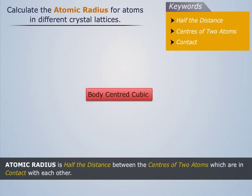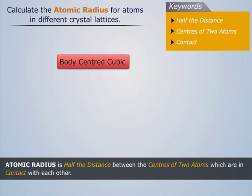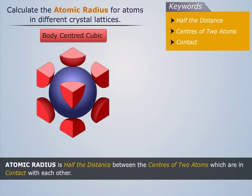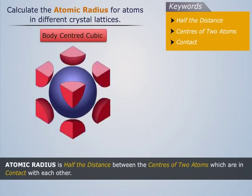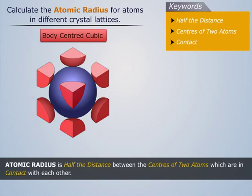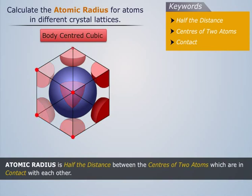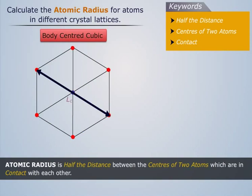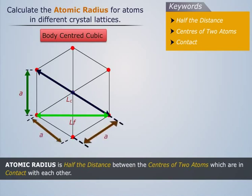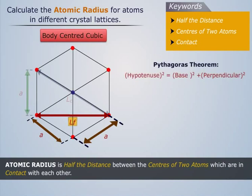Now let's calculate the atomic radius for a body centered cubic lattice. We know that a body centered cubic lattice has eight corner atoms surrounding one central atom. The central atom is in contact with all eight corner atoms. Let us denote the diagonal of this cube by LC. This diagonal LC is the hypotenuse to the edge and face diagonal LF. The face diagonal is the hypotenuse to the two edges of the cube on the same face.